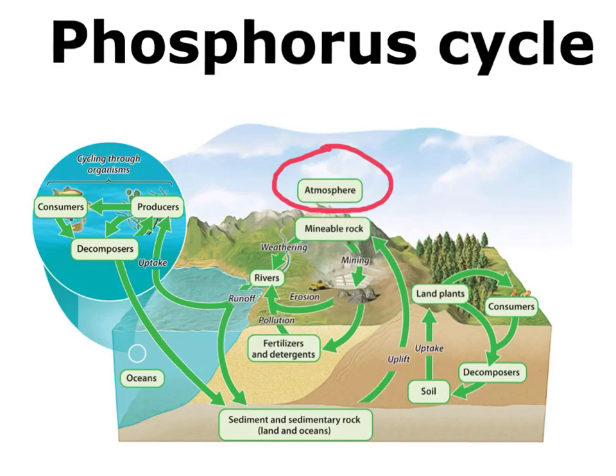Overall, this is probably the simplest biogeochemical cycle because there is no atmospheric stage in the phosphorus cycle. So this concludes our study of the biogeochemical cycles — remember, we have water, carbon, nitrogen, and phosphorus. Thank you for watching.